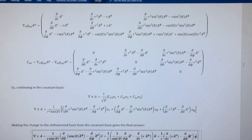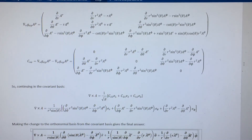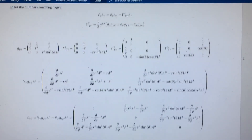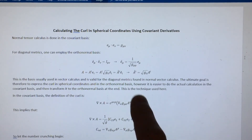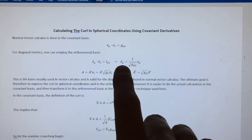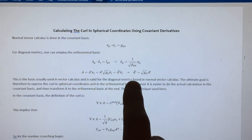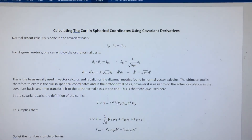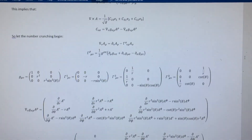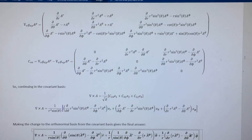From the curl definition we can insert the requisite anti-symmetric tensor components along with the one-over-square-root-of-the-metric-determinant factor to get an answer. However, this still doesn't match the standard answer because it's still in the covariant basis. Using the relationships between the covariant and orthonormal basis vectors, and between contravariant vectors in the two bases, we substitute those relations in to transform into the orthonormal basis.